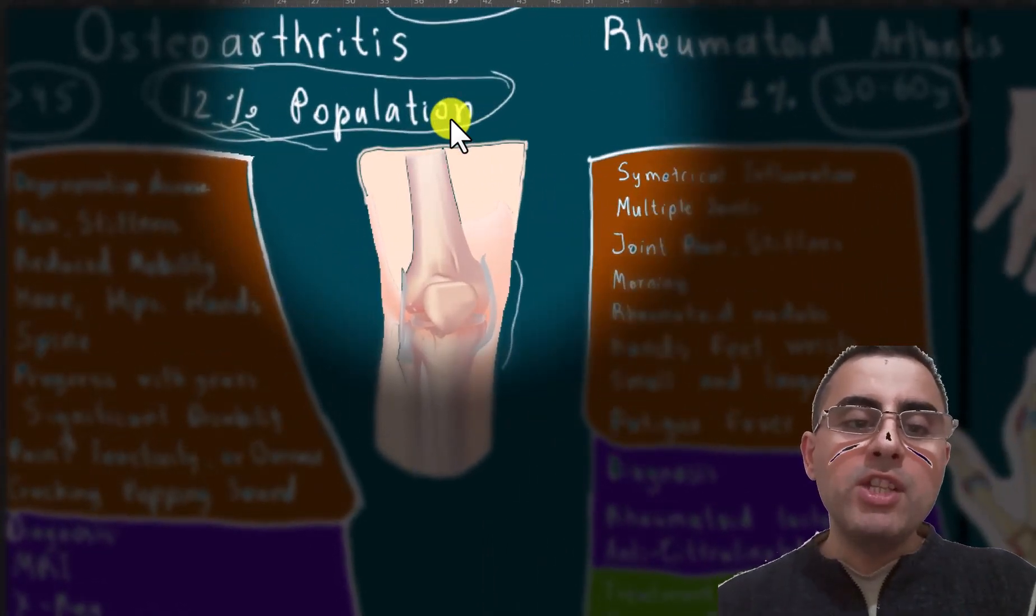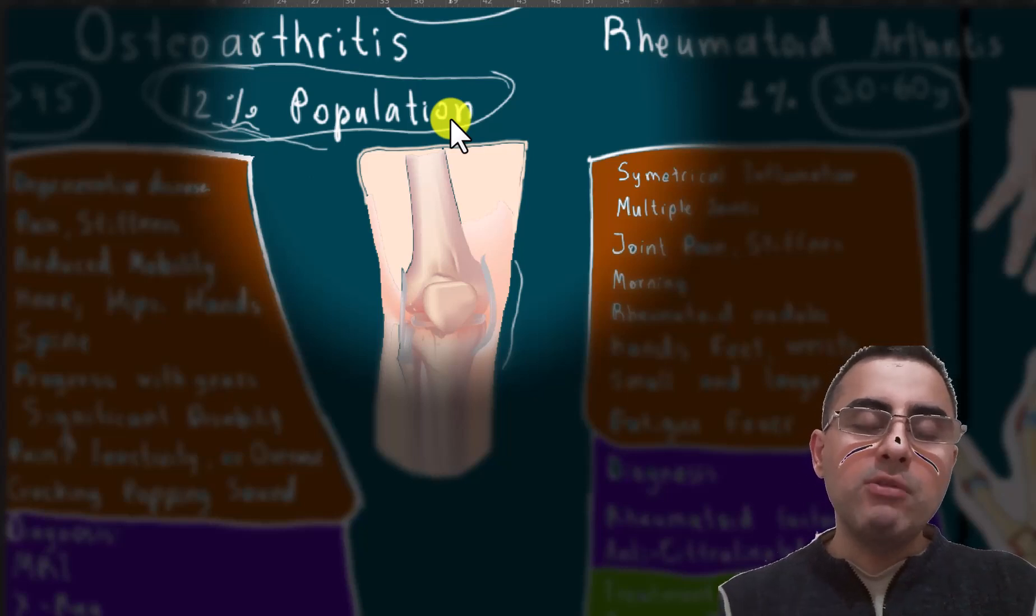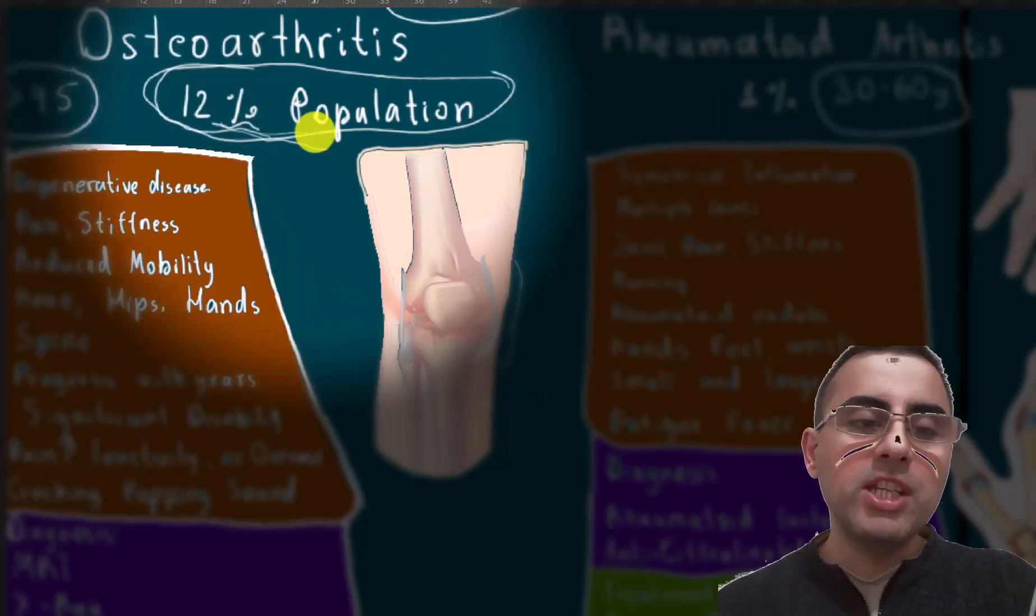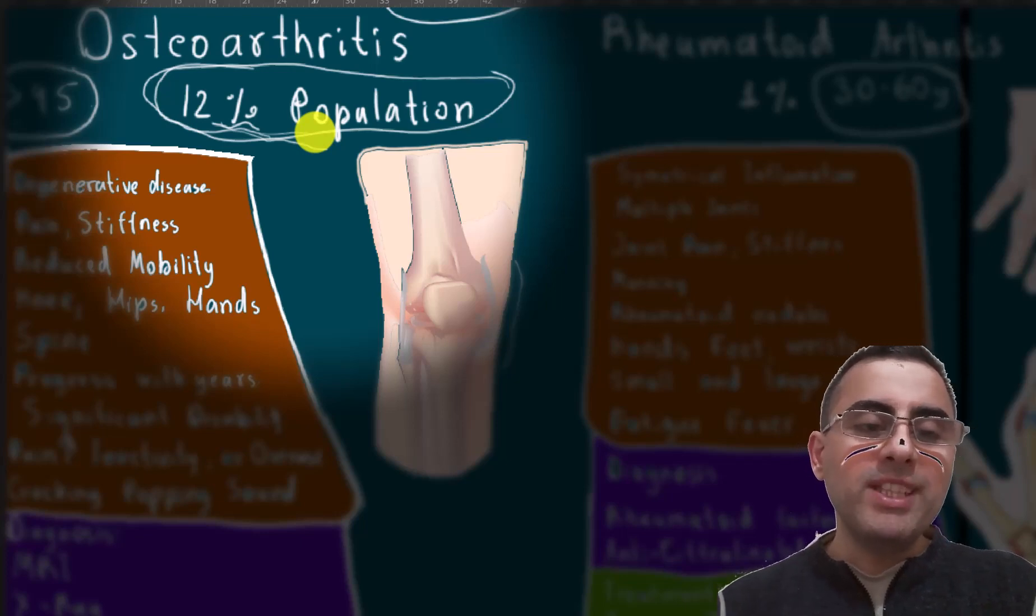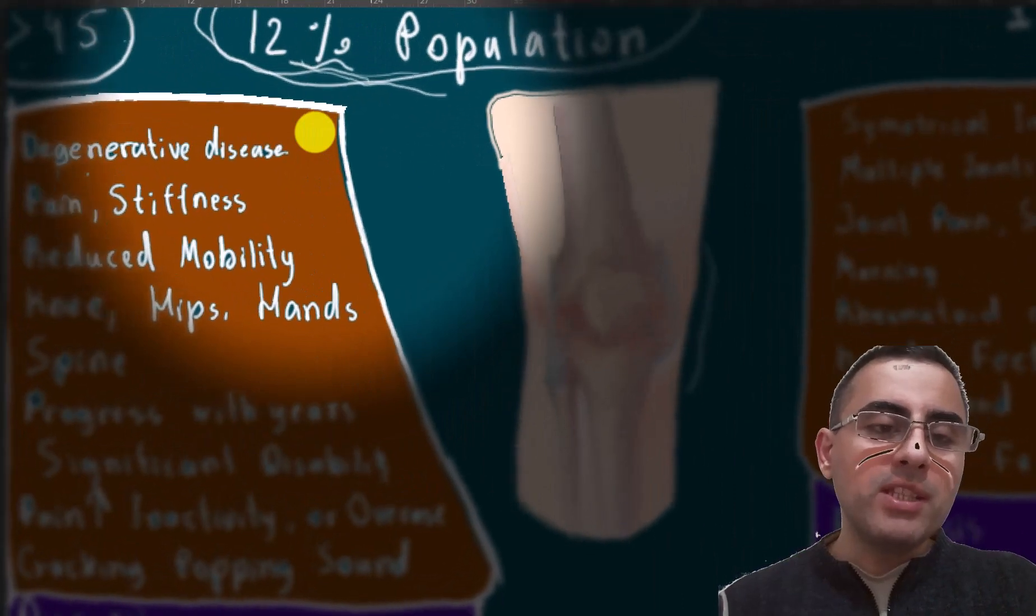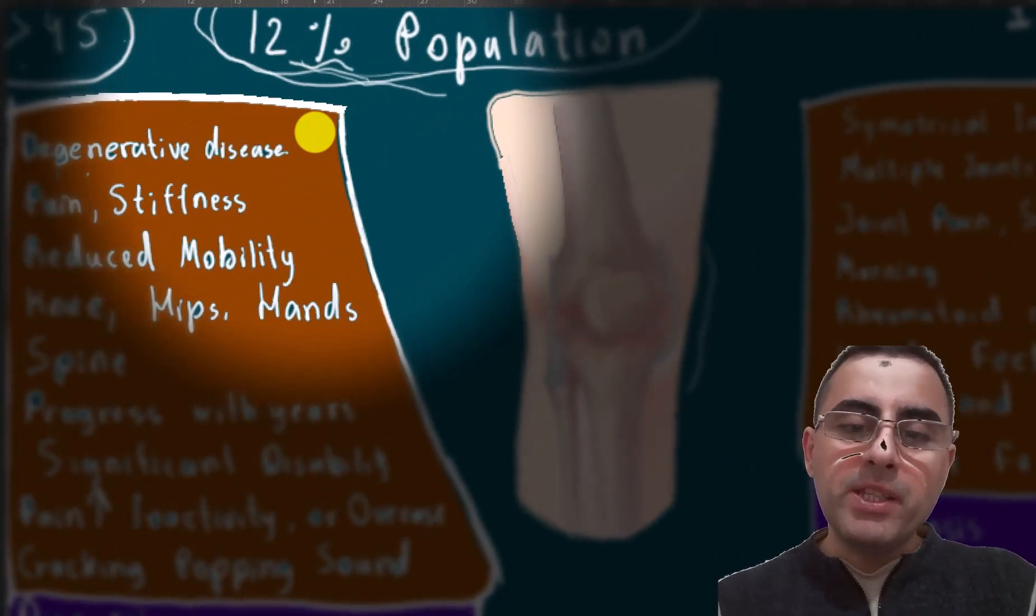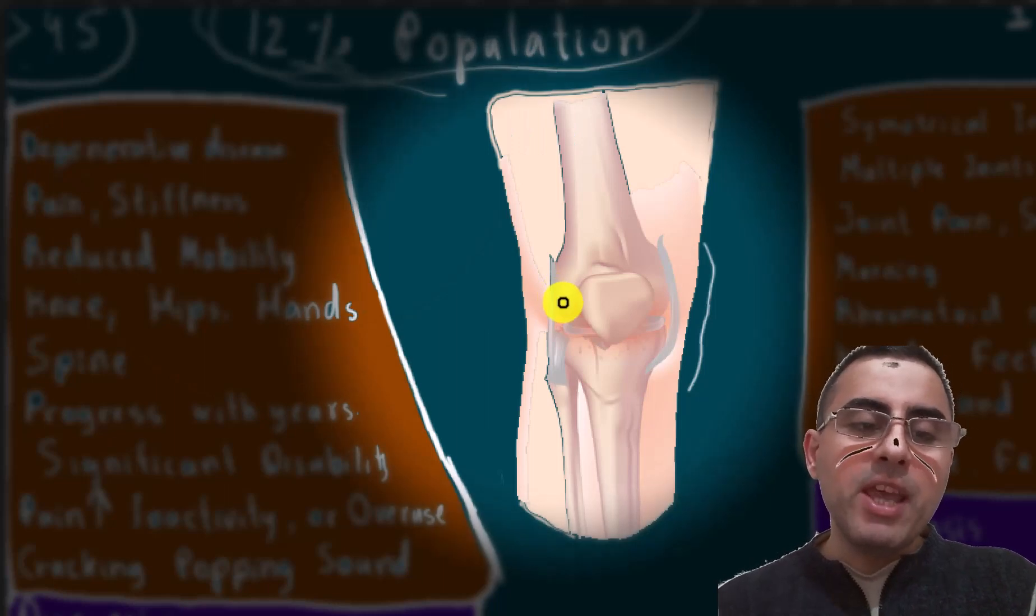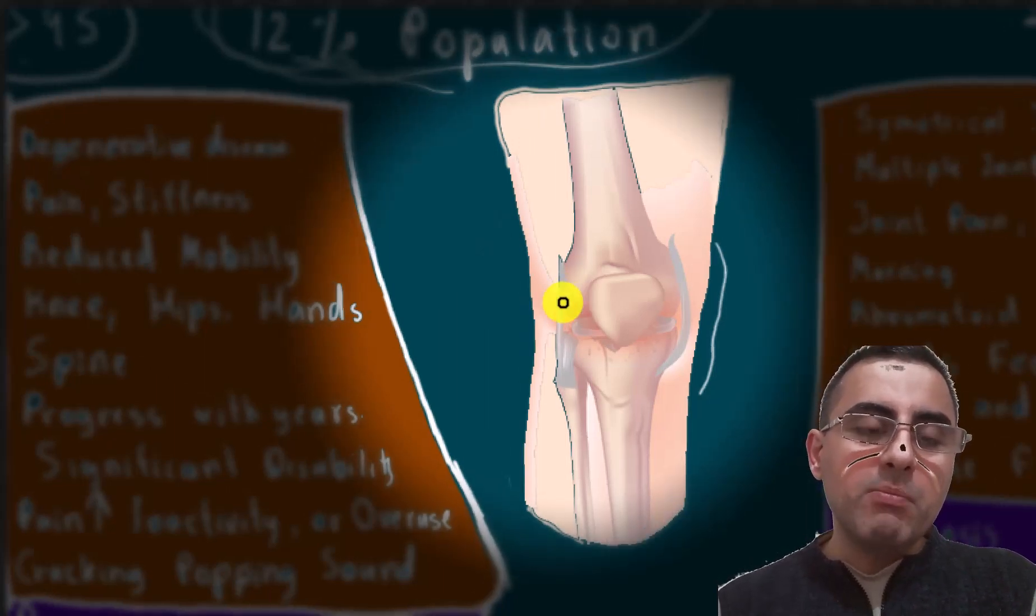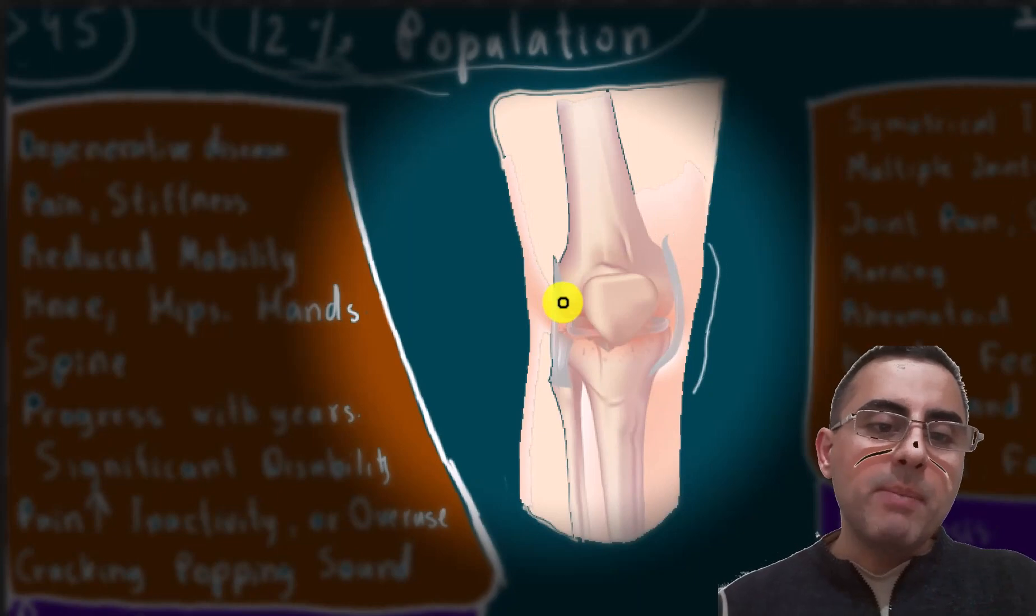Osteoarthritis affects around 12% of the population, is more common after age 45, so it is related to older age. Osteoarthritis is called a degenerative disease because the joints degenerate over time. It leads to pain, stiffness, and reduced mobility.